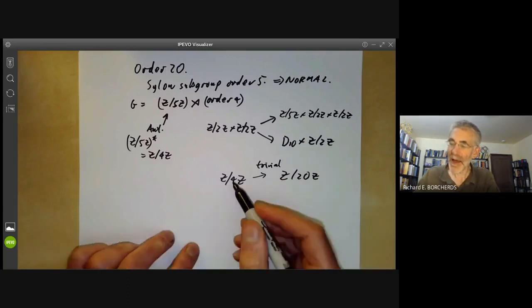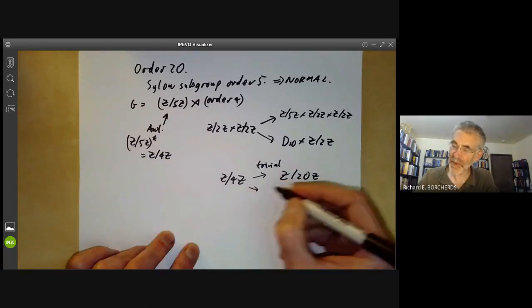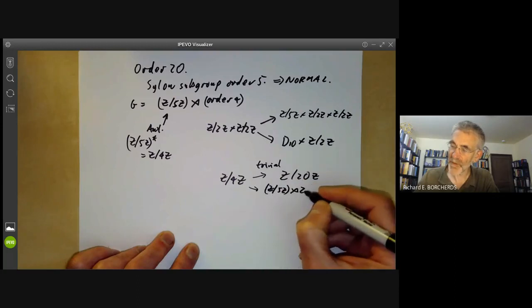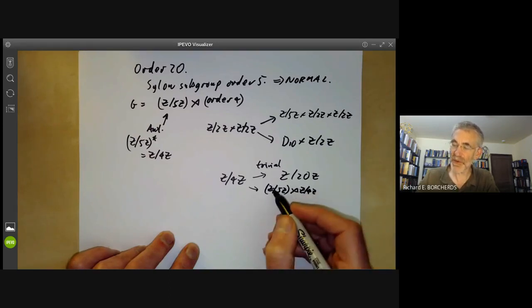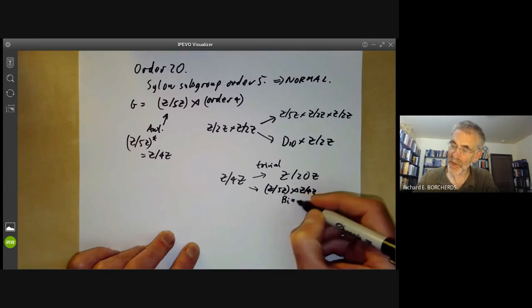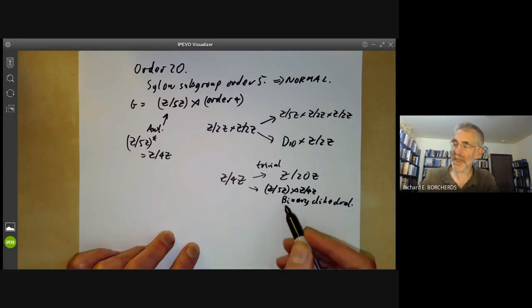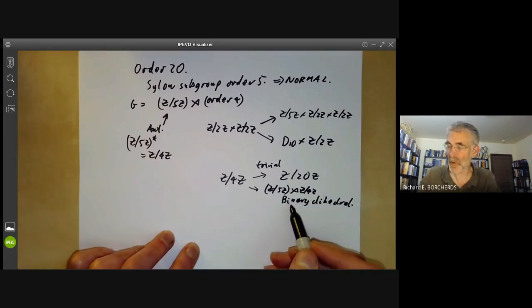Or we could have this acting as a group of order 2 on this group of order 5. So we get a group Z/5Z semi-direct product Z/4Z with a generator of this acting as an element of order 2 on the automorphism group of this. This is actually one we've seen before. It's actually the binary dihedral group of order 20. So you remember this means we take the group of rotations of order 10 given by the dihedral group and take its inverse image in the unit quaternions.